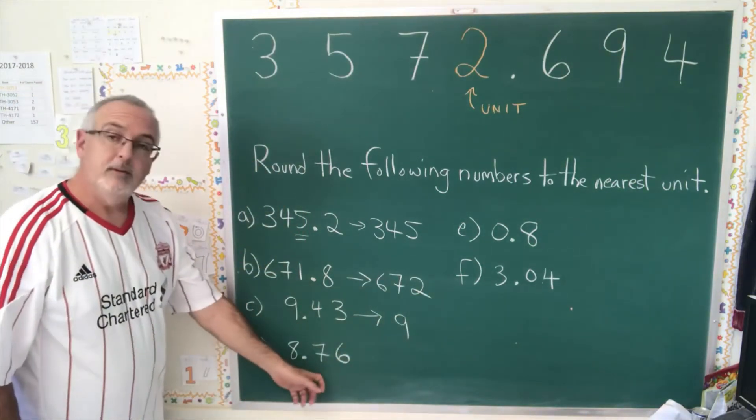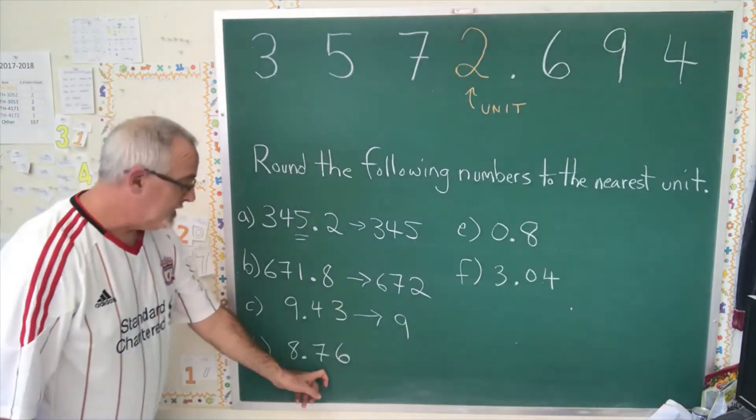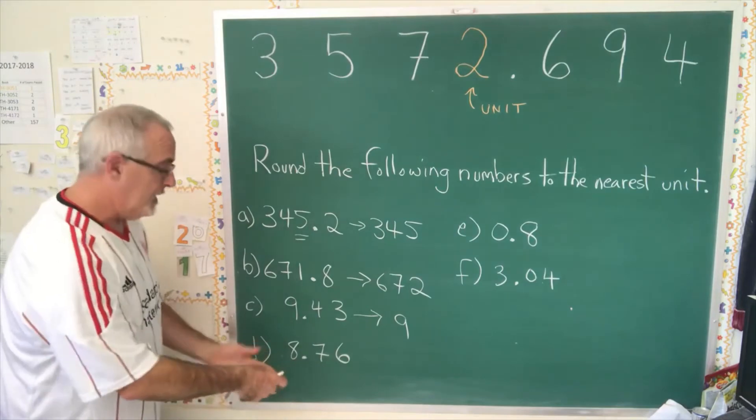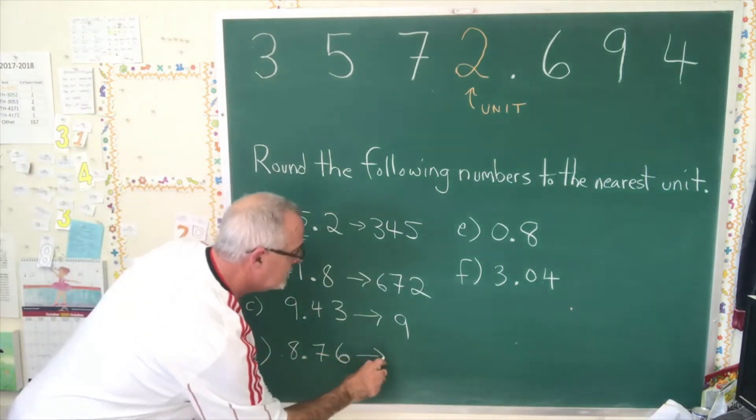8.76 though, the number after the decimal in the 10th position is a 7. It's greater than 4. So therefore, I have to round up. This also rounds to 9.